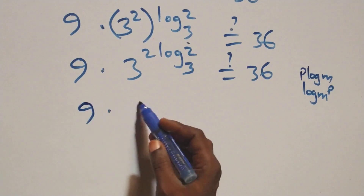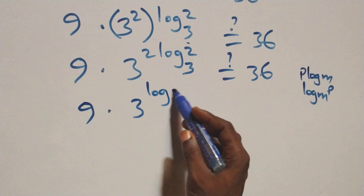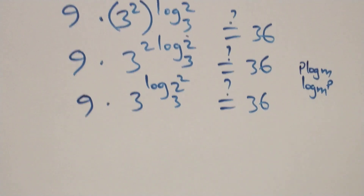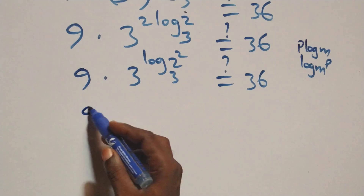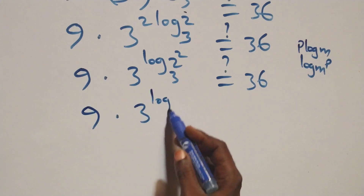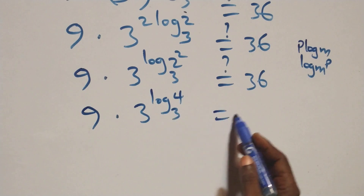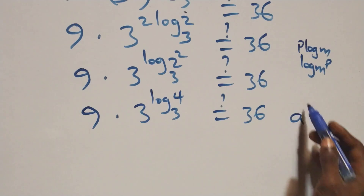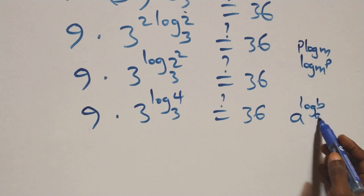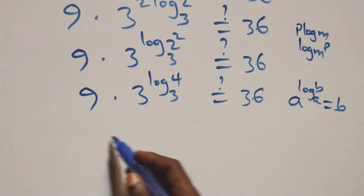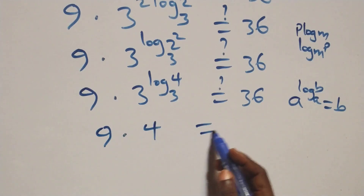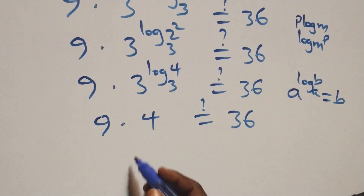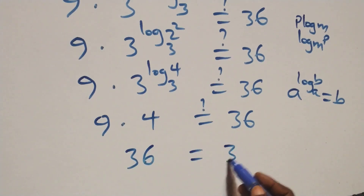We have 9 times 3 raised to power log(2 squared) base 3, equal to 36. That is, 9 times 3 raised to power log 4 base 3, equal to 36. This follows the logarithm law: when we have A raised to power log B to base A, that equals B. So this becomes 9 times 4 equals 36, and of course 9 times 4 gives us 36, which equals 36 on the right-hand side.